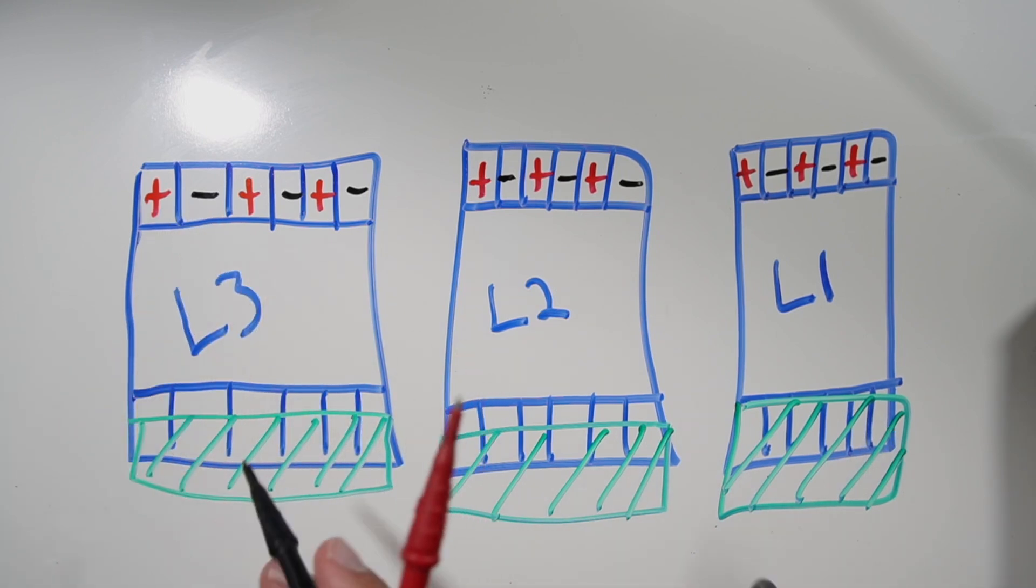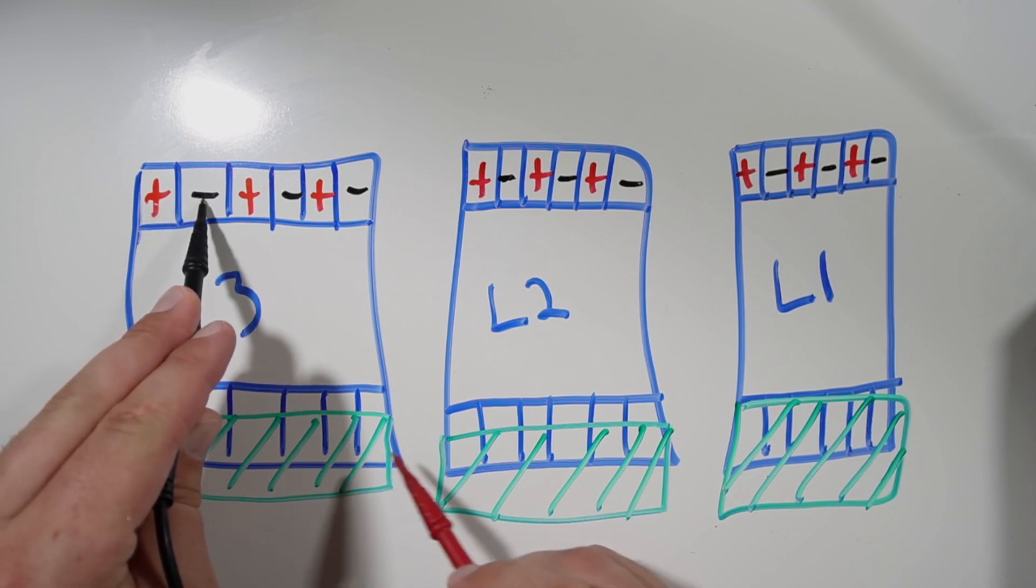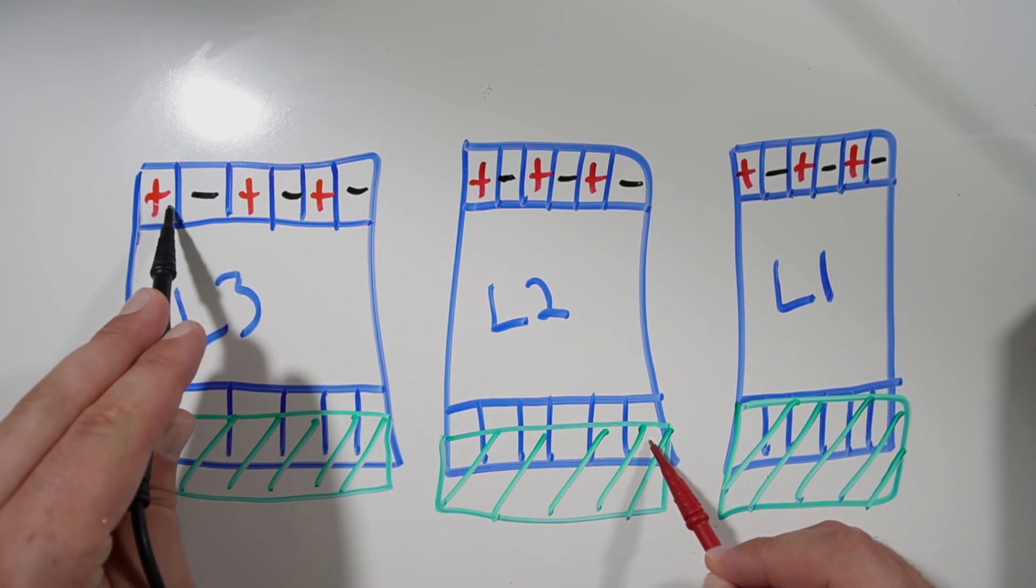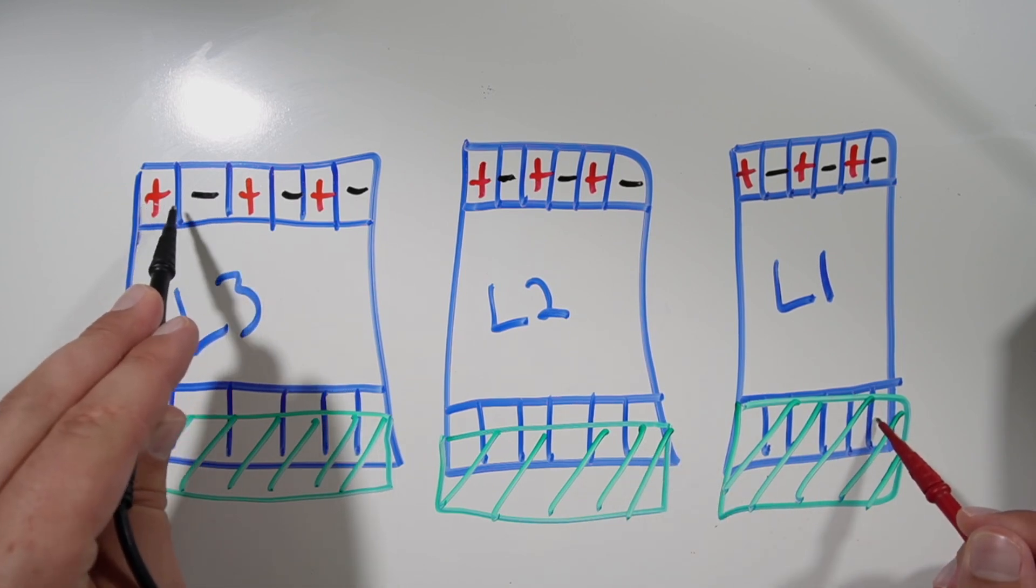Then we would switch the leads. We'd get just the opposite. This would give us VDC, this would give us OL. VDC, OL. VDC, OL.